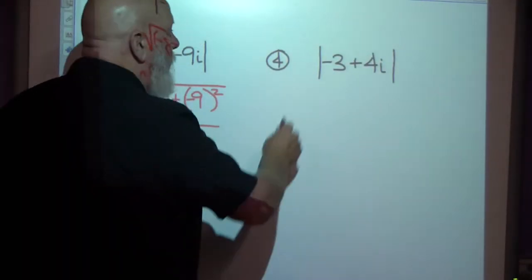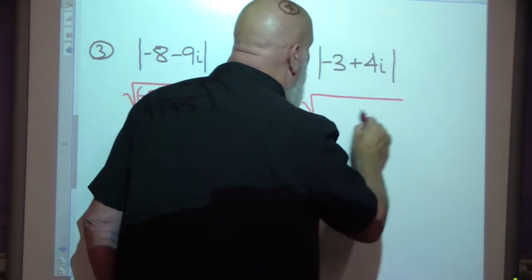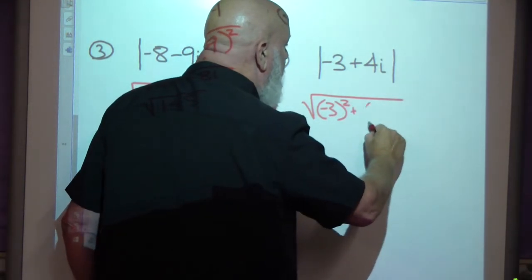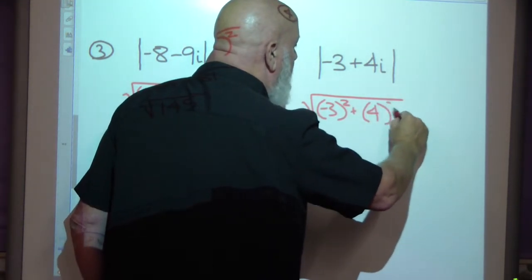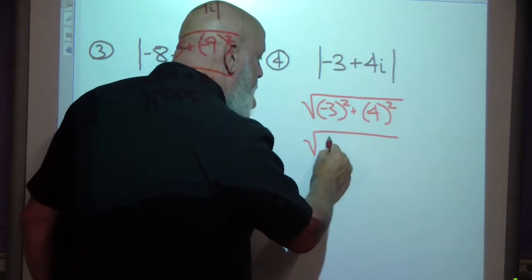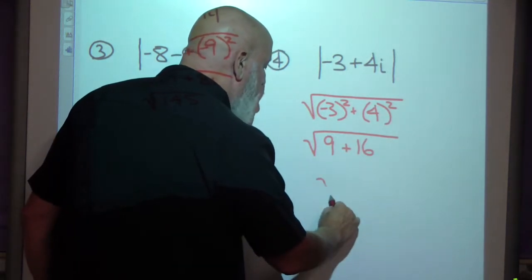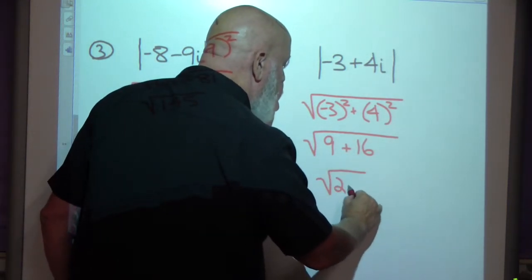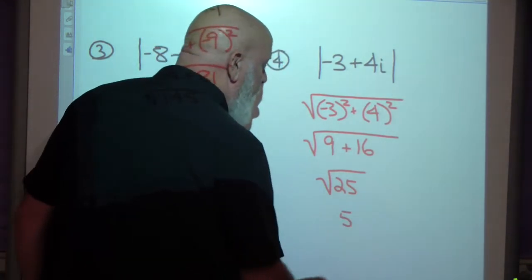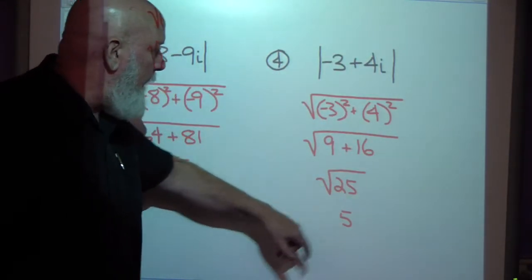Now we'll find the absolute value of negative 3 plus 4i. Take the square root of negative 3 squared plus 4 squared. That's the square root of 9 — negative 3 times negative 3 — plus 16. That's the square root of 25. The square root of 25 is 5, which we learned when we were little. So the absolute value of this complex number is 5.